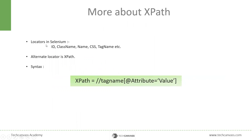There are different types of locators available in Selenium automation — for example, ID, class name, name, etc. These locators are used to locate or identify any element in a web page, which can be used further for automation. XPath, in similar lines, is an alternate locator.